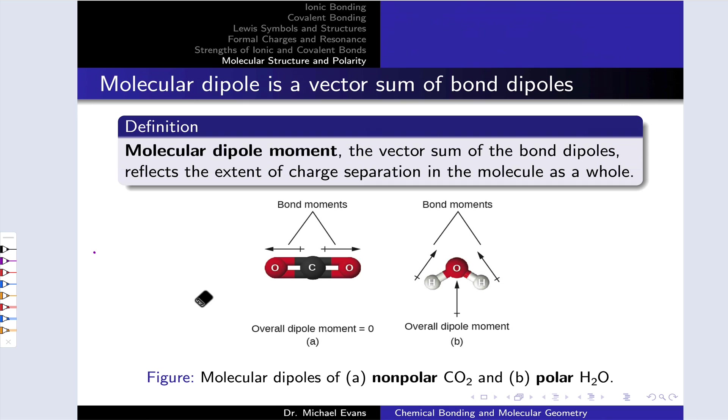The molecular dipole moment is a vector sum of all of the bond dipoles. So to determine molecular dipole moment, we first determine the directions and rough magnitudes of all of the bond dipoles. Most importantly, whether all the bond dipoles are the same or different in magnitude. And then we do a vector sum of all of those bond dipoles to determine the molecular dipole moment. And the molecular dipole moment reflects the separation of charge in the molecule as a whole.